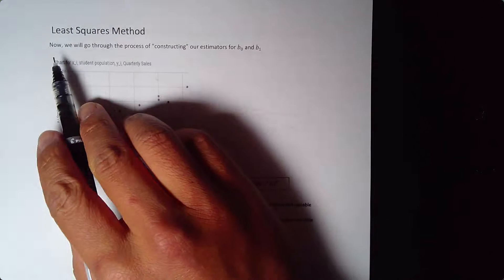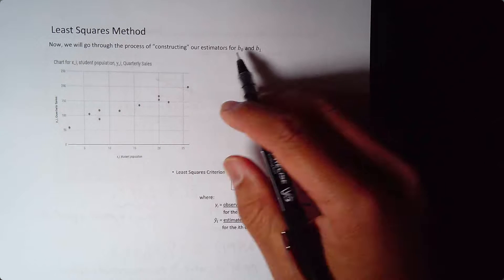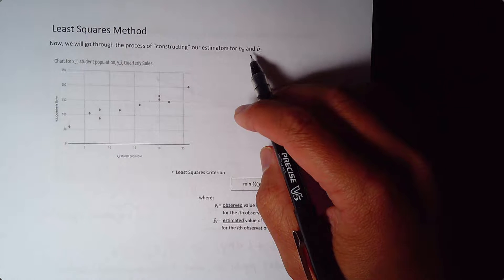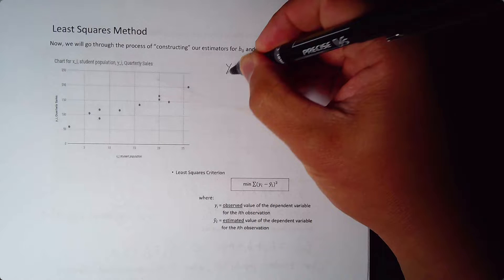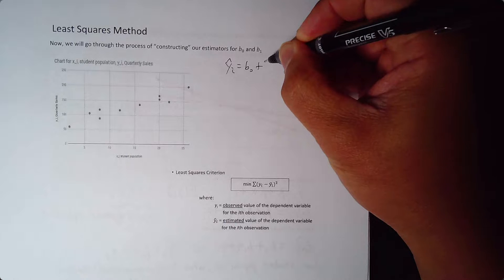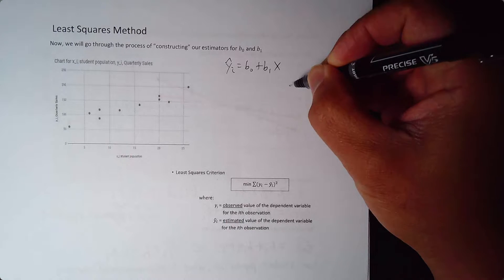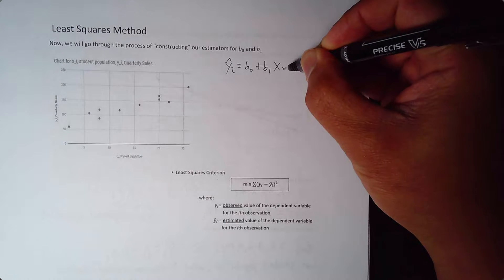Okay, so now we will go through the process of constructing our estimators for B0 and B1. So again, remember, our goal is to get this linear equation: yi equals B0 plus B1 plus xi.